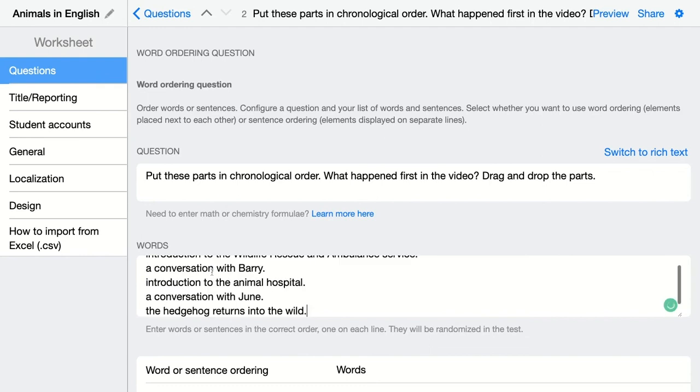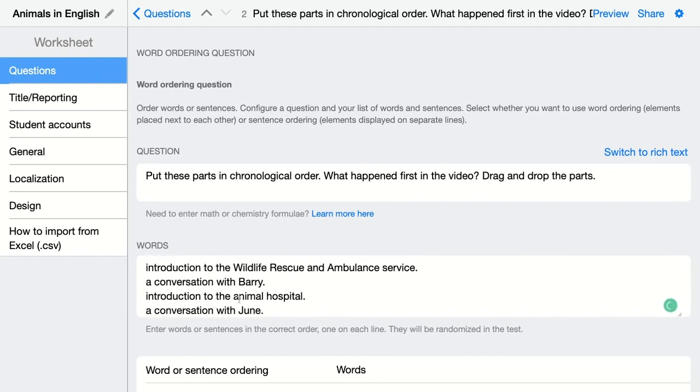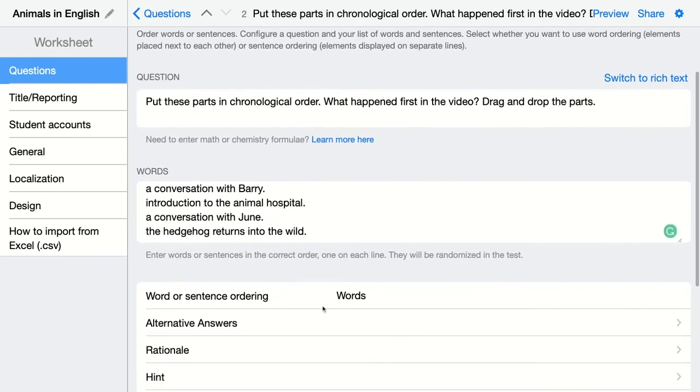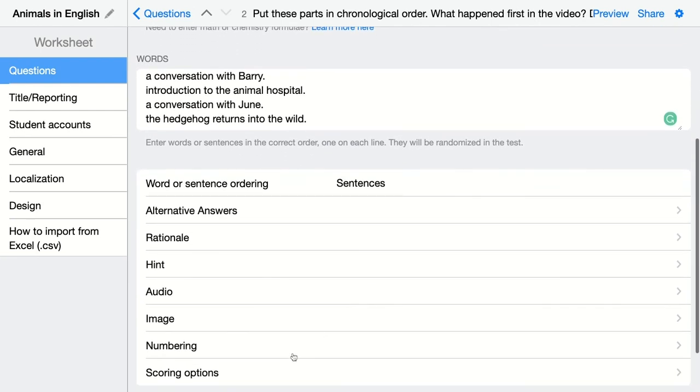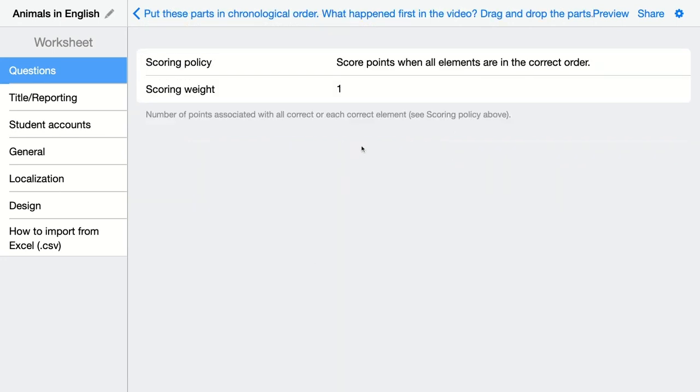For each sentence or piece of text they have to order, I'm adding it to a different line. And then here you have to choose sentences. And then, of course, the scoring options are important as well. Again, here you can choose the score points when all elements are in the correct order. In this case, I'm choosing score points for each element in the correct position.